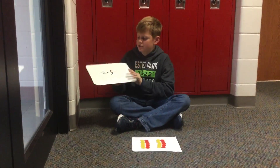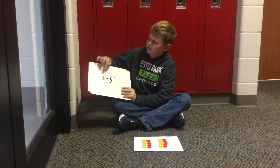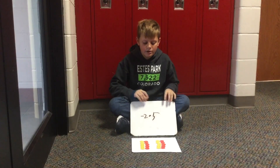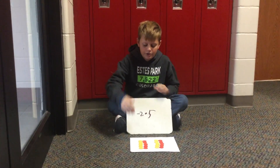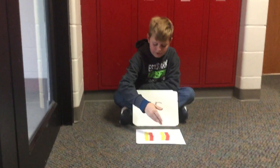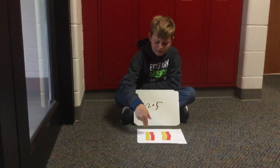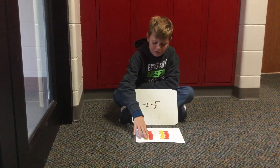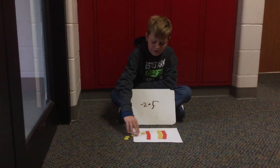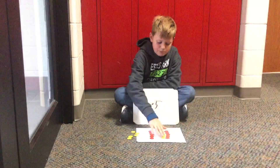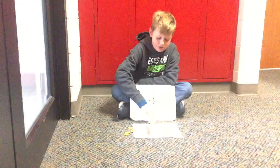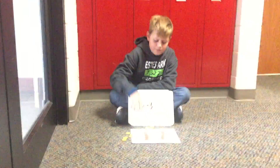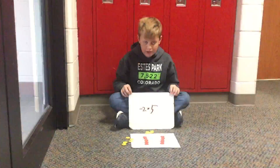The next problem is multiplication. So what we're going to do is negative 2 times 5. I already have the negative 2 times 5 set up, but it's not finished yet. What you have to do is take away the positives to make it negative, because it's negative 2. So you're left with 10 negative.